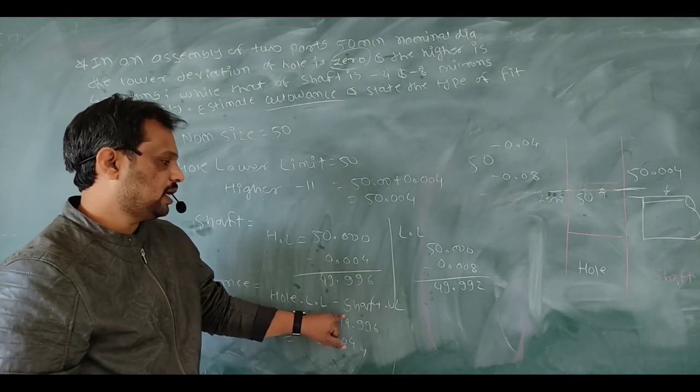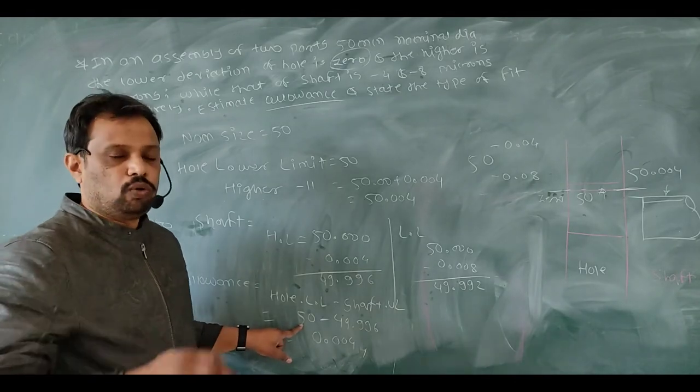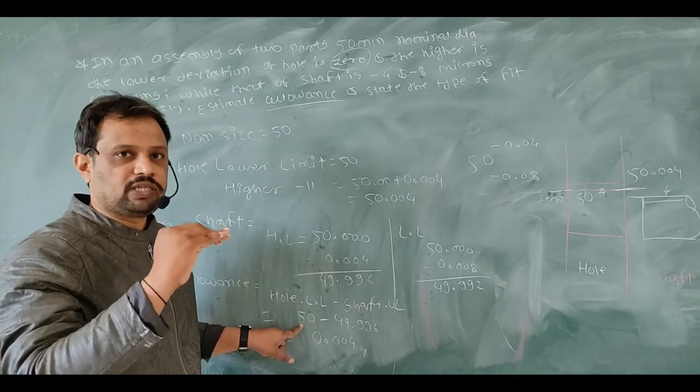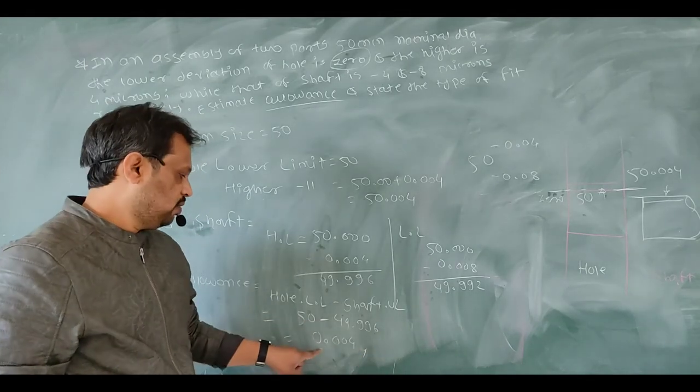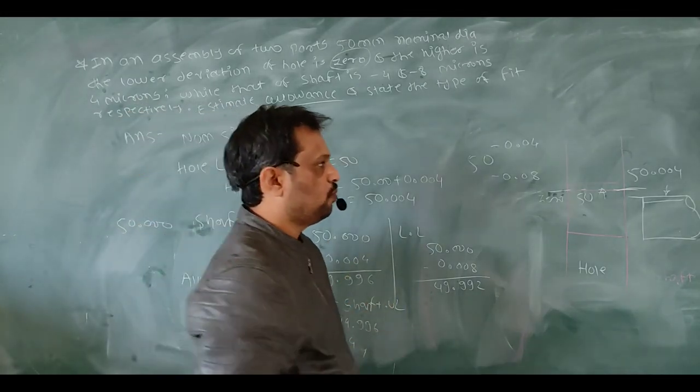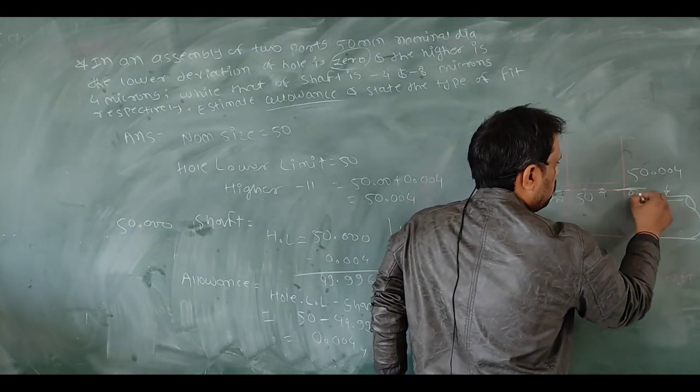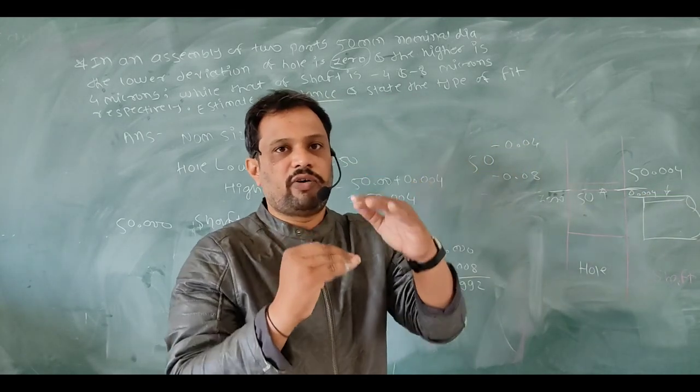The hole lower limit is 50mm, minus shaft upper limit is 49.996mm. From this calculation, I get a clearance of 0.004mm between hole and shaft.